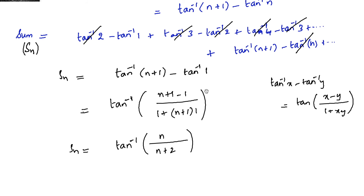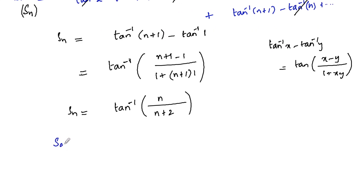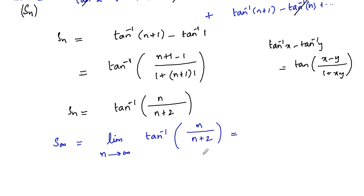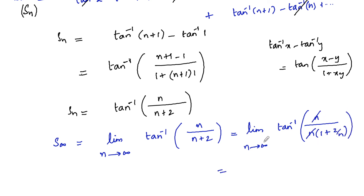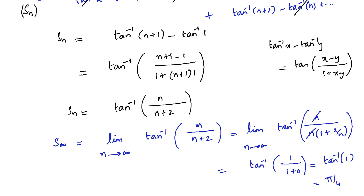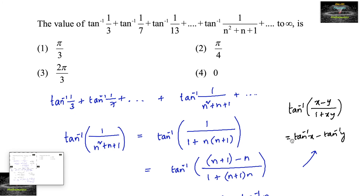We require the sum to infinity. So sum to infinity: limit as n tends to infinity of tan inverse(n/(n+2)). Taking n common in numerator and denominator gives tan inverse of 1/(1 + 2/n). As n tends to infinity, 2/n becomes 0, so we get tan inverse(1/1) = tan inverse(1) = π/4. So the answer is π/4, which is the second option.